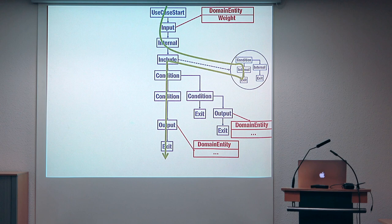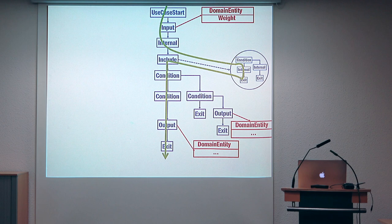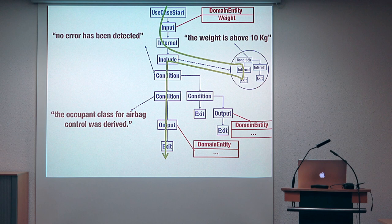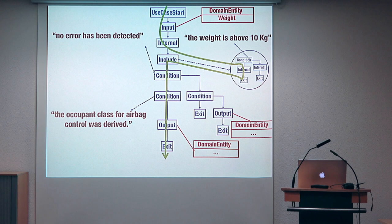For example, given such a model, we want to tell the engineers that they need to simulate the presence of an adult by putting a weight of 80 kilos on the seat, to cover the case in which the system should detect the presence of an adult and communicate this information to the other component. If you want to have an execution that covers a specific path, you need to identify an input that satisfies the different conditions on the execution path — a weight that is about 10 kilos, a weight that does not lead to the detection of any errors, and so on.